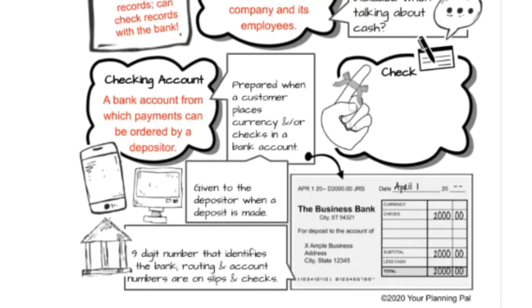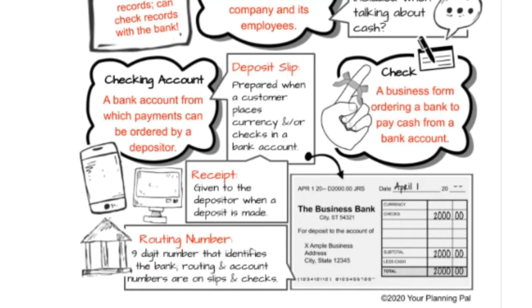A checking account is defined as a bank account from which payments can be ordered by a depositor. A deposit slip is prepared when a customer places currency and/or checks into a bank account, and a receipt is given to the depositor when a deposit is made. On the bottom of a deposit slip there's a routing number — a nine-digit number that identifies the bank routing and account numbers. A check is defined as a business form ordering a bank to pay cash from a bank account. Note: you do not journalize a deposit because that transaction was already journalized when money was received, and you don't want to double-record it.